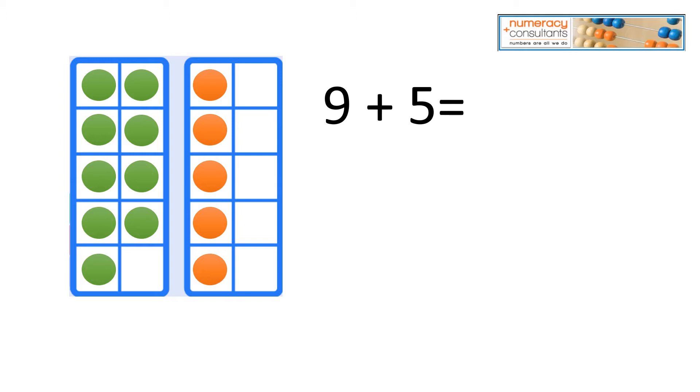And it's much more efficient because if you take a look at 9 plus 5, a lot of kids, especially kids in early ages, they'll want to go 9, 10, 11, 12, 13, 14. They'll want to count by ones, which is fine because that's a developmental stage.